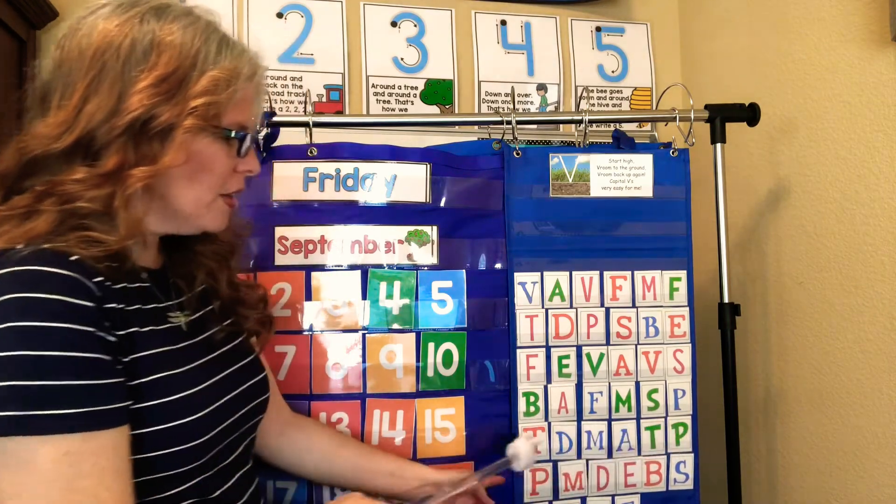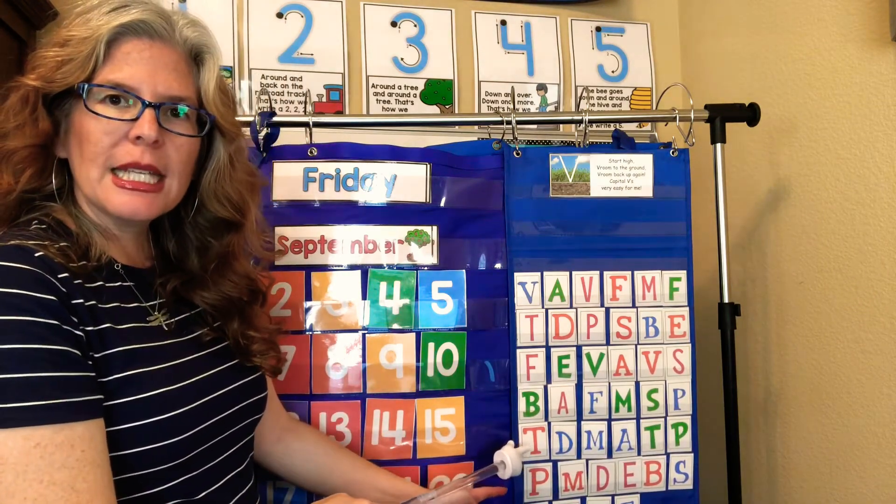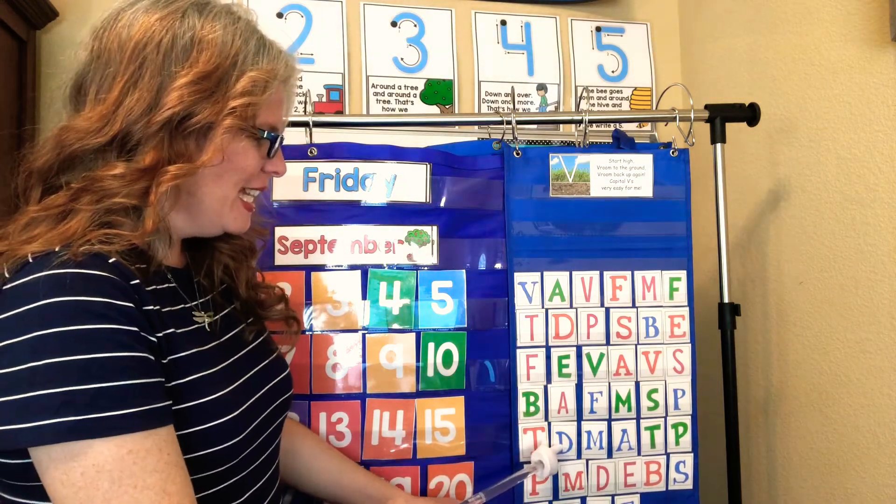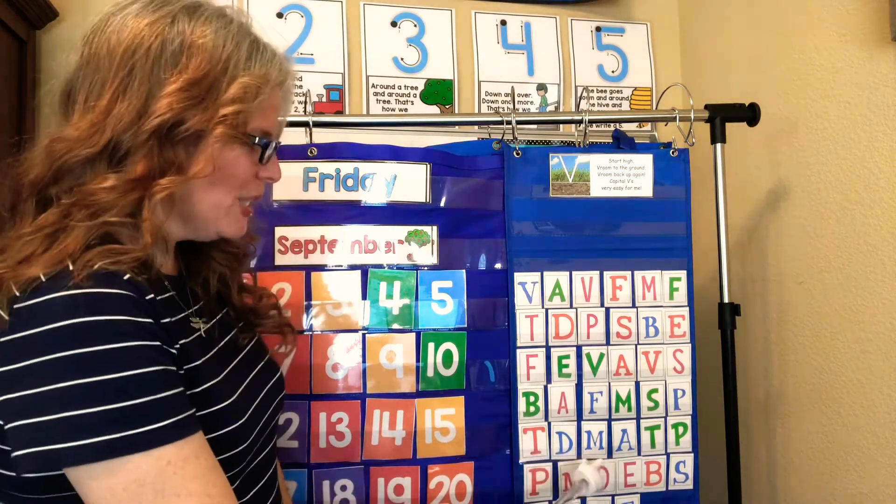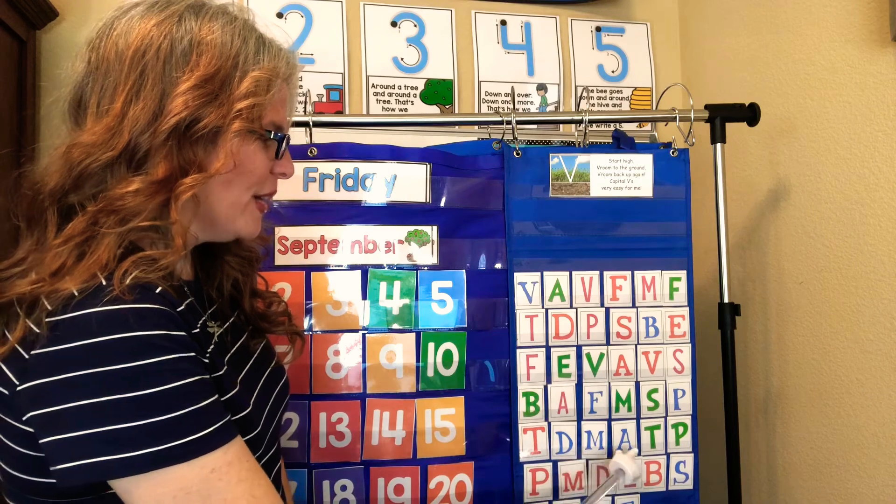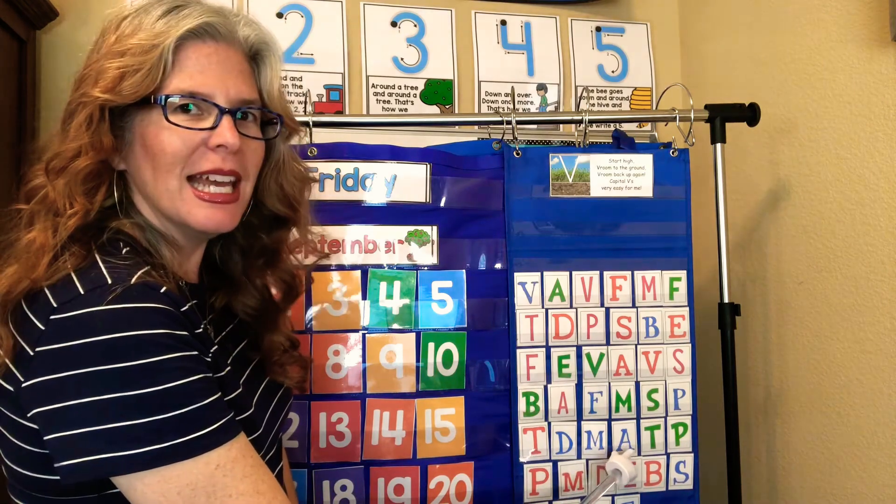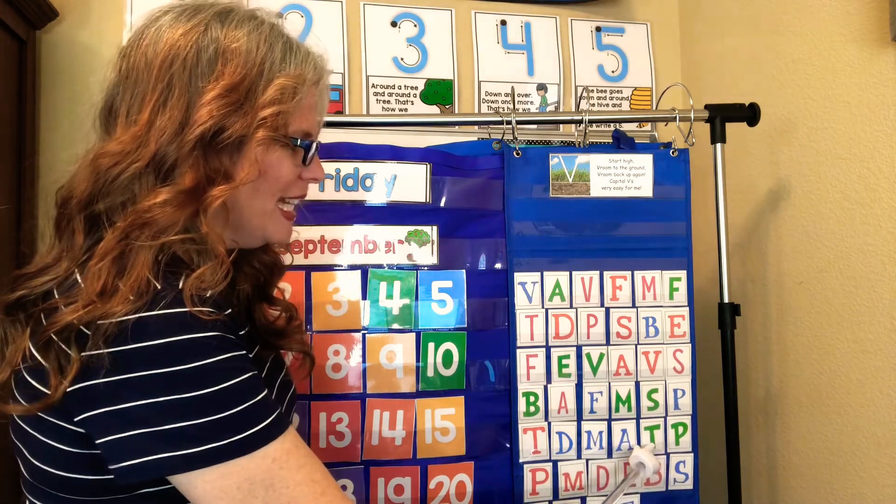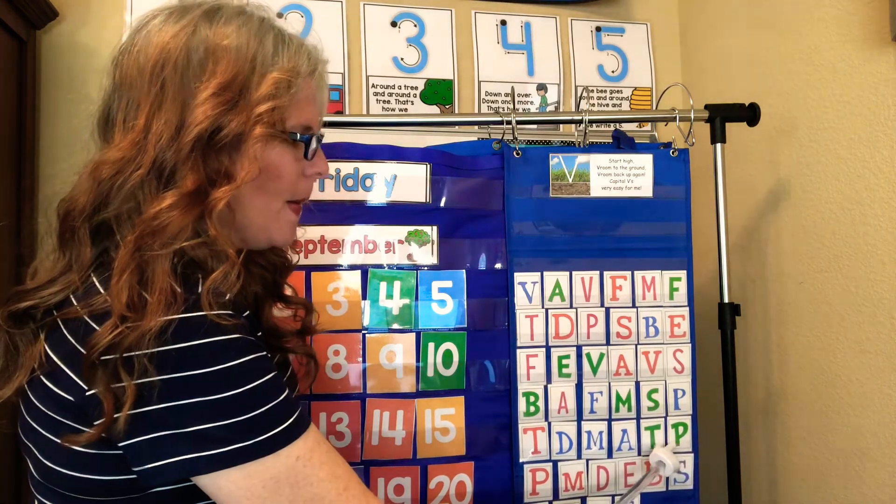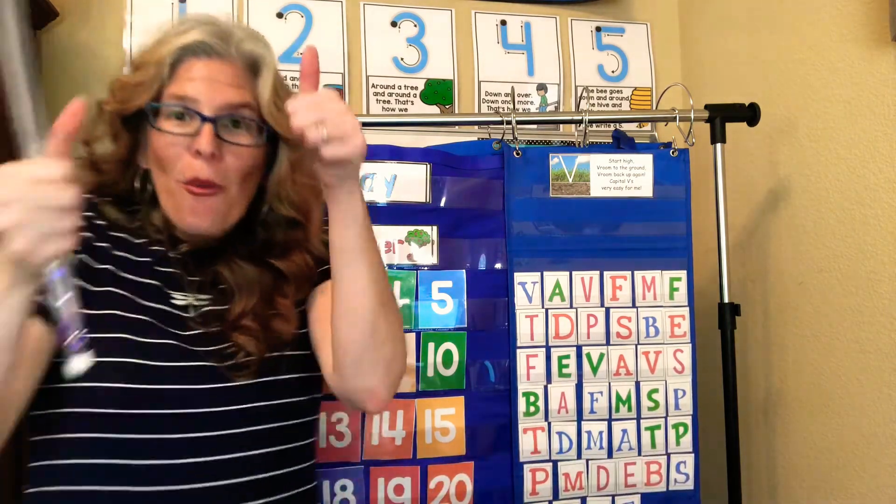Okay, we're just going to shout out the letters on this row. Ready? What letter is this? T. Good. This one? D. Excellent. This one? M. Good job. This one? A. Good. This one? T. And the last one? P. Wow.